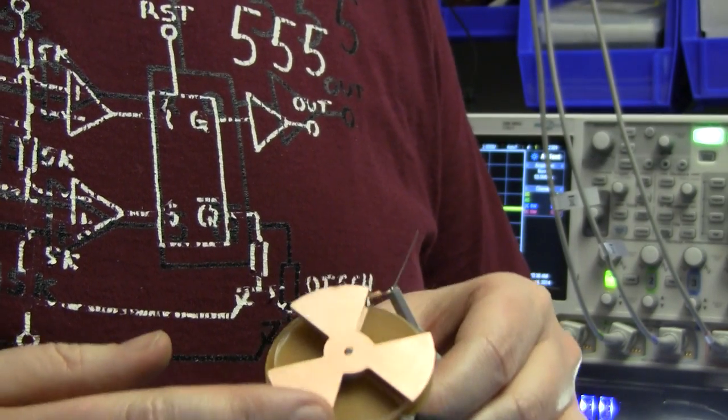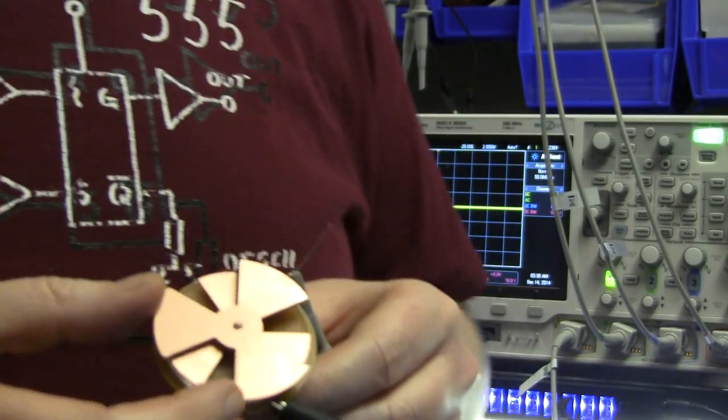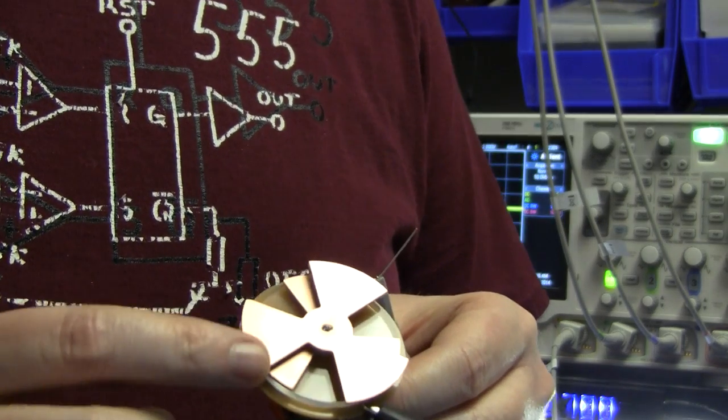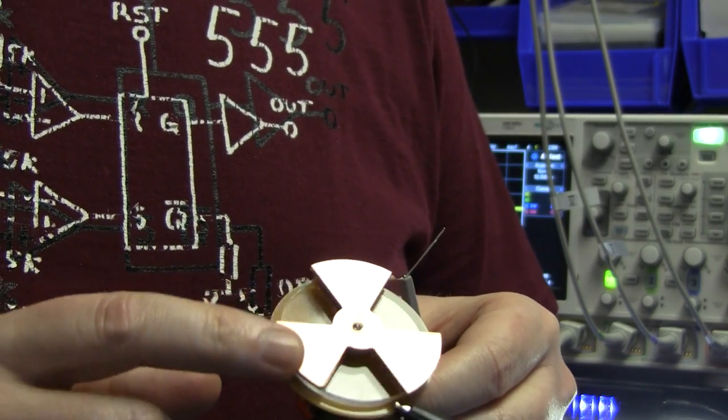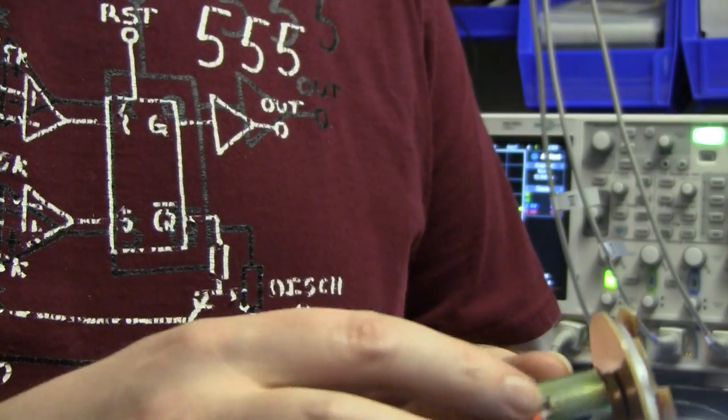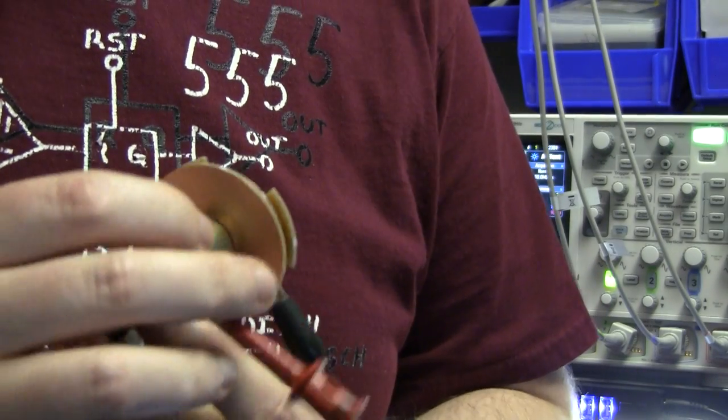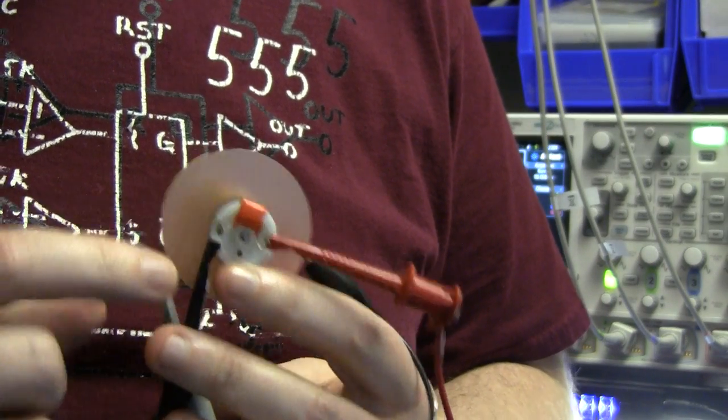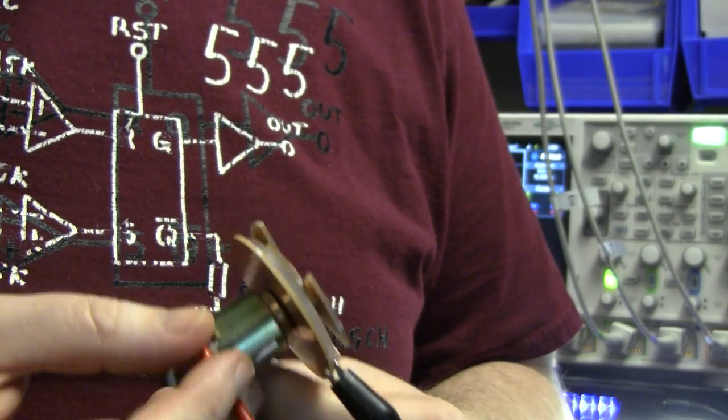So what I've done here is I've just cut out some PCB material in this trefoil shape, and we have this rotor piece and a ground plate, both of which are just made out of printed circuit board material. And we have a toy electric motor, it's like a 1 volt, 1.5 volt motor.